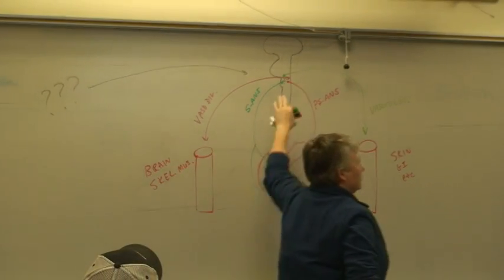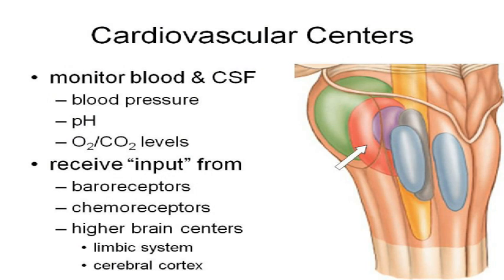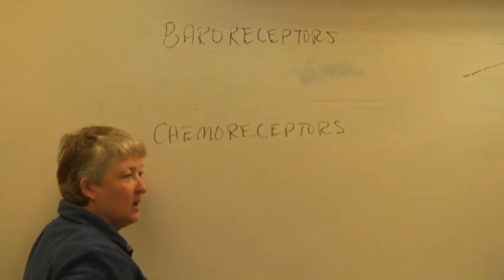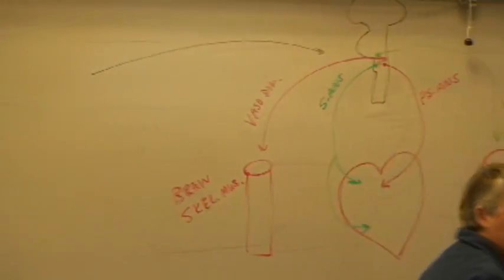The cardiovascular centers in the medulla oblongata get input from three different areas. They get input from baroreceptors — receptors that monitor blood pressure. You also have chemoreceptors, which detect chemicals: the pH, the oxygen, and the carbon dioxide levels. All of this is something we are not consciously aware of. I can't tell you if my blood pressure is up or down right now.